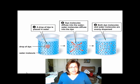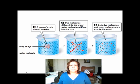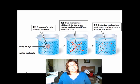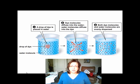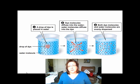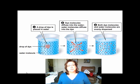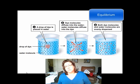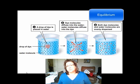If we break it down: a drop of dye is placed in water. The dye molecules diffuse into the water, the water molecules will diffuse into the dye, both moving from areas where they're high in concentration to where they're low, and then ultimately both the dye and the water will be equally distributed. This equal distribution of the molecules throughout the available space is referred to as equilibrium.